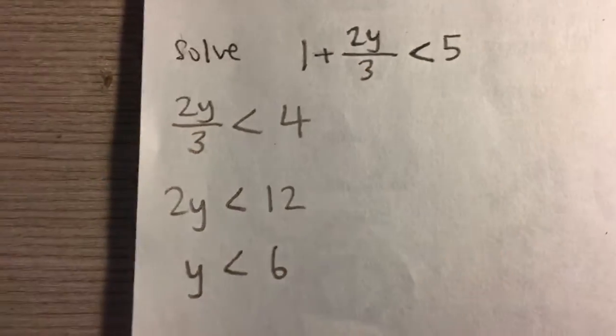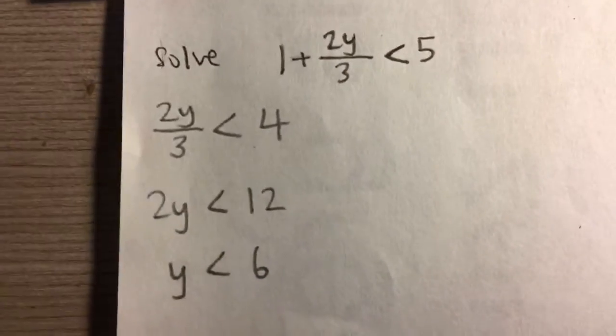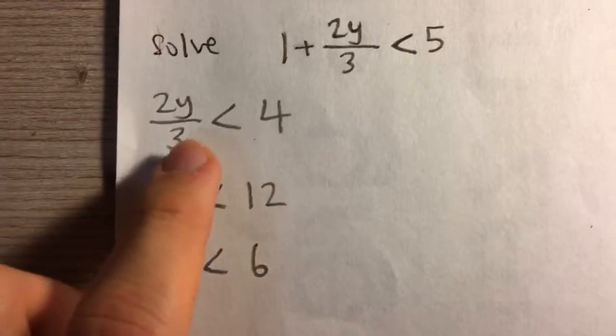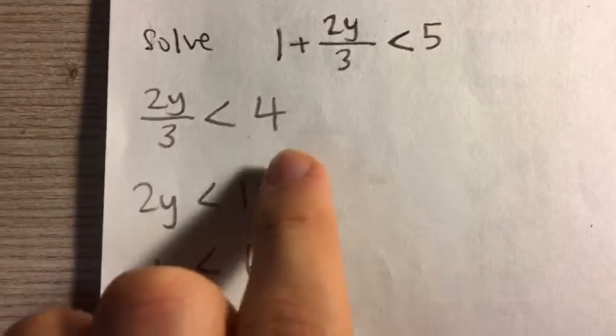We're going to isolate y—in other words, solve for y. First, I'm going to subtract 1 from both sides. On the right, I'm going to get 4.